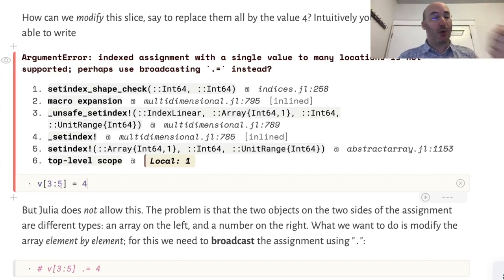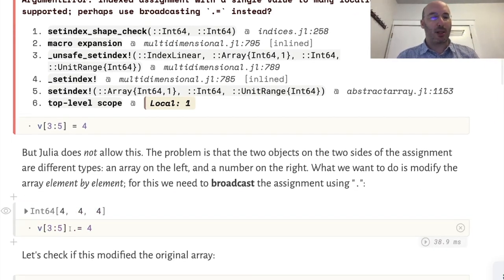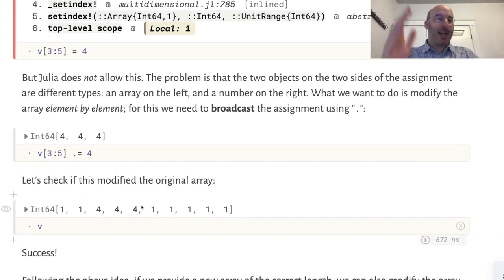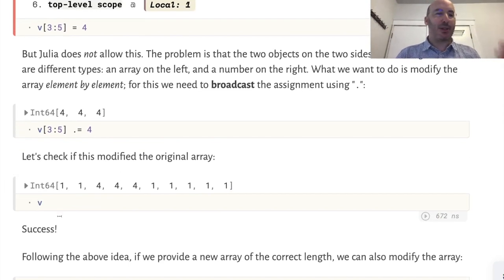We have to be more explicit and tell Julia exactly what we want to do. What we want is to assign the number 4 to each element of that array. We can do that using this dot syntax called broadcasting. If I add a dot before the equal sign, I'm going to assign 4 element-wise or element by element. When I do that, we see that indeed the original array got modified itself.